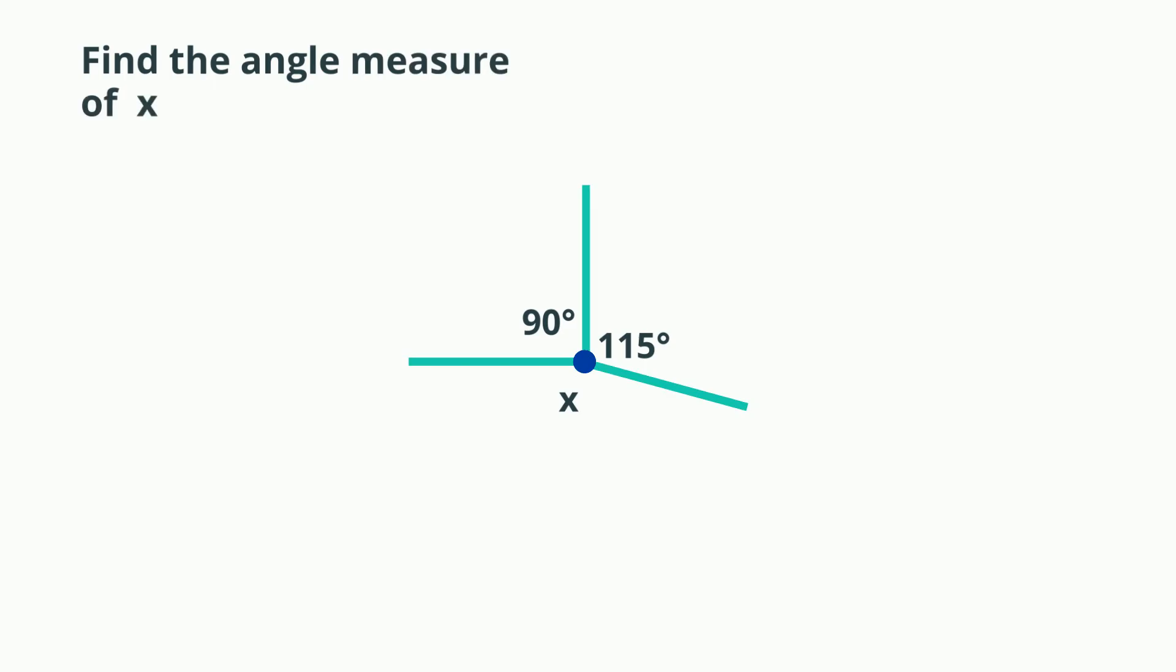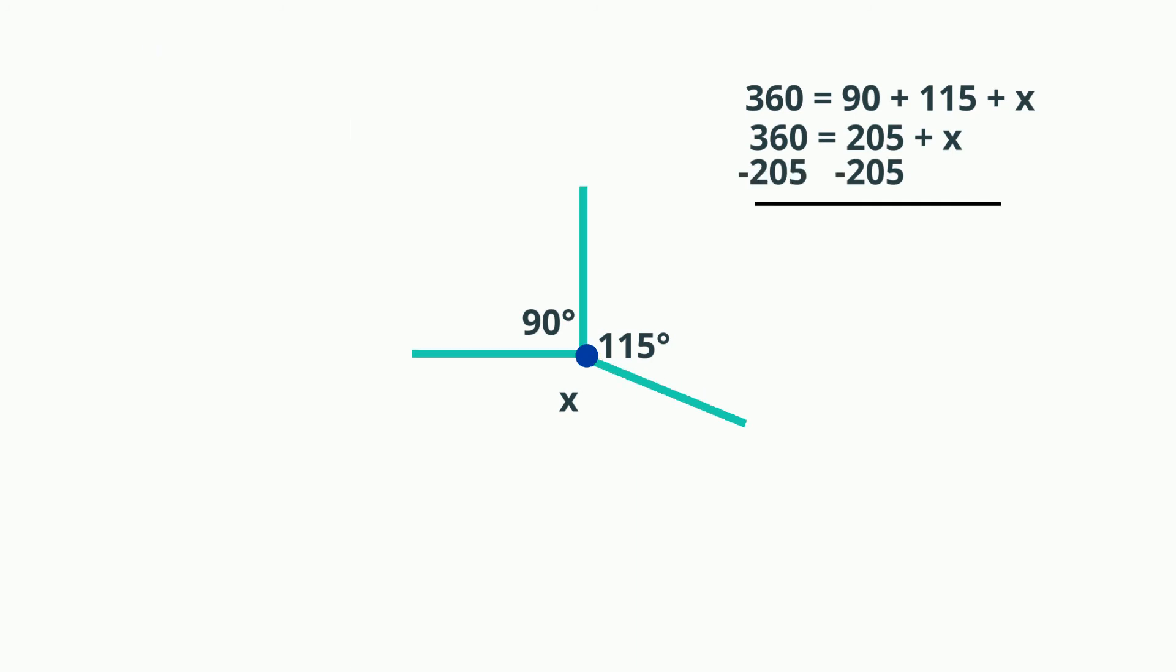What about this? The same rule applies. The angles around a point equal 360 degrees, so we set 360 degrees equals 90 plus 115 plus x. Let's combine like terms: 90 plus 115 is 205. Subtract 205 from both sides, x equals 155, so the missing angle measure is 155.